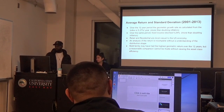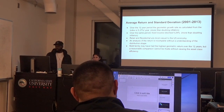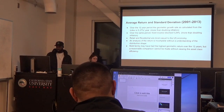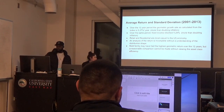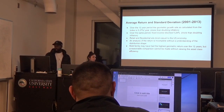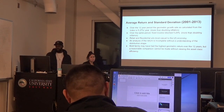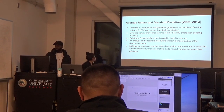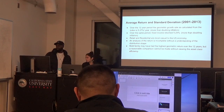Retail and residential are the most casual to the U.S. economy, and multi-families may have that higher geometric return over the 12 years, but a reasonable comparison cannot be made without building an asset class efficiency.